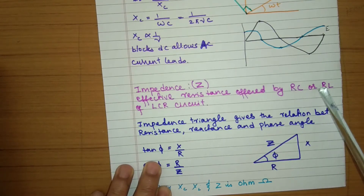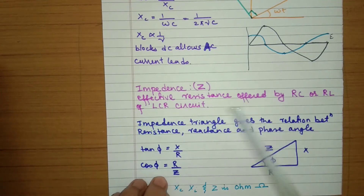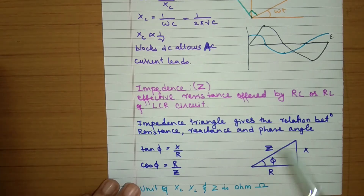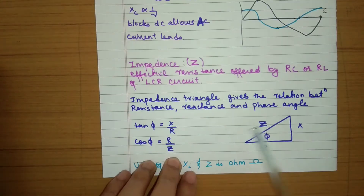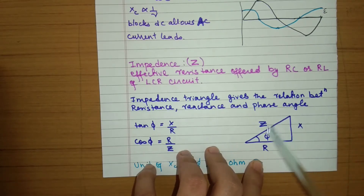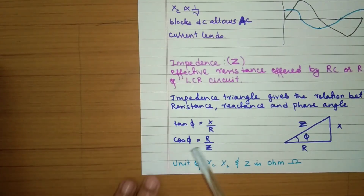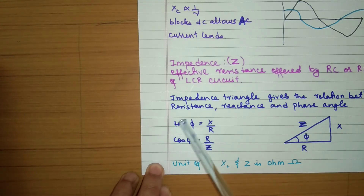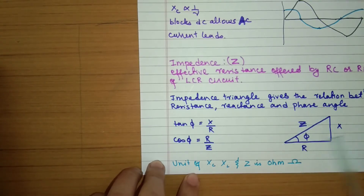Impedance is the effective resistance offered by an RC, RL, or LCR circuit. If the circuit is only resistors we call it resistance; when combined with other components we call it impedance. The impedance triangle relates R, reactance (X), impedance (Z), and phase angle φ. From it: tan φ = X / R and cos φ = R / Z. The units of X_C, X_L, and Z are ohms.